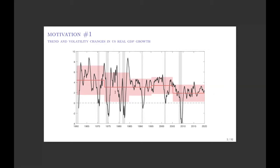The mean of GDP growth seems to vary gradually across time, with different long-run growth levels in different parts of the sample. Not only the mean is moving — the volatility is also moving substantially. The shaded area representing the standard deviation shows that prior to 1984 volatility was much greater than afterwards, even after observing the big crisis in 2008. These are the first two features: slow-moving variation in the mean and variance of GDP growth.